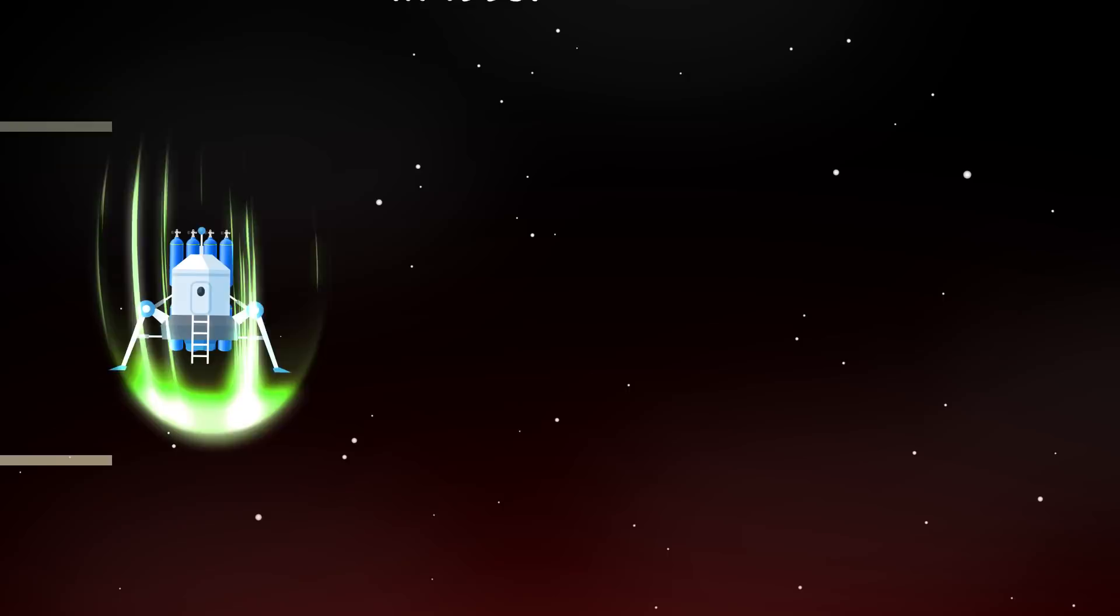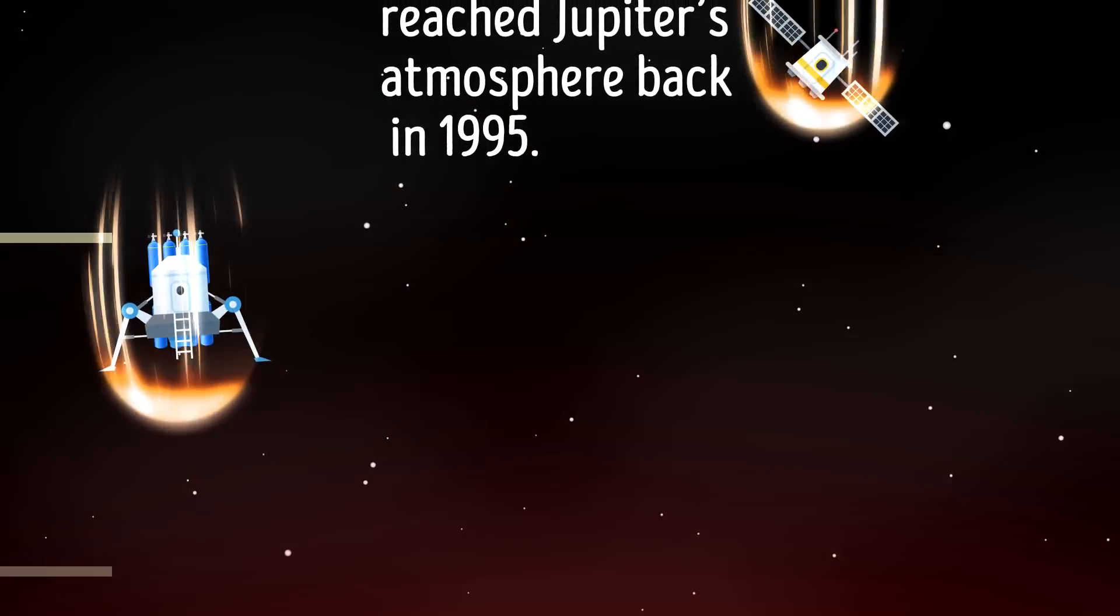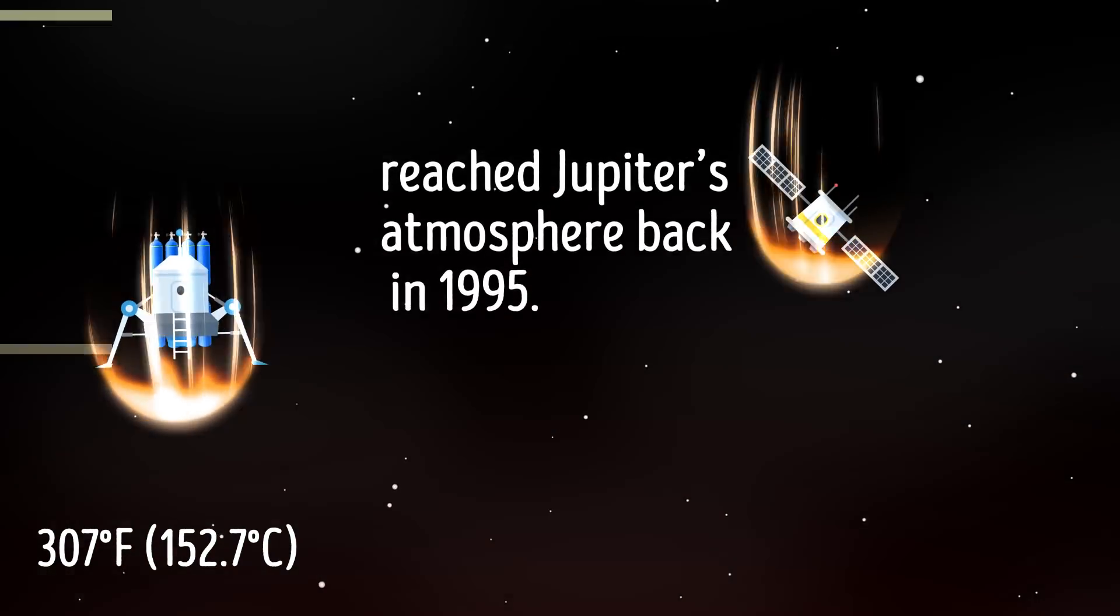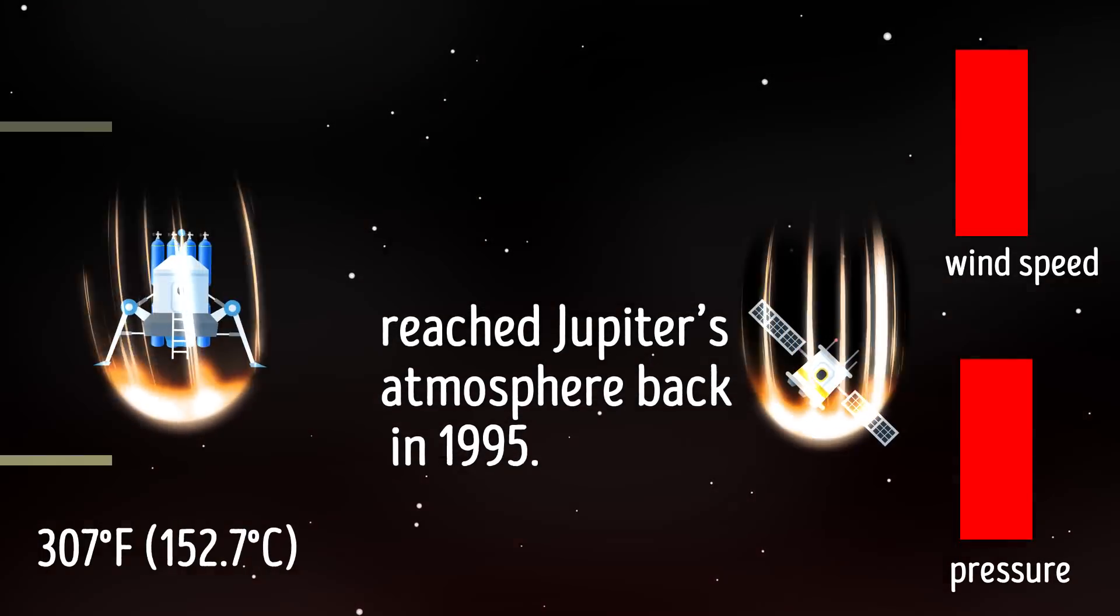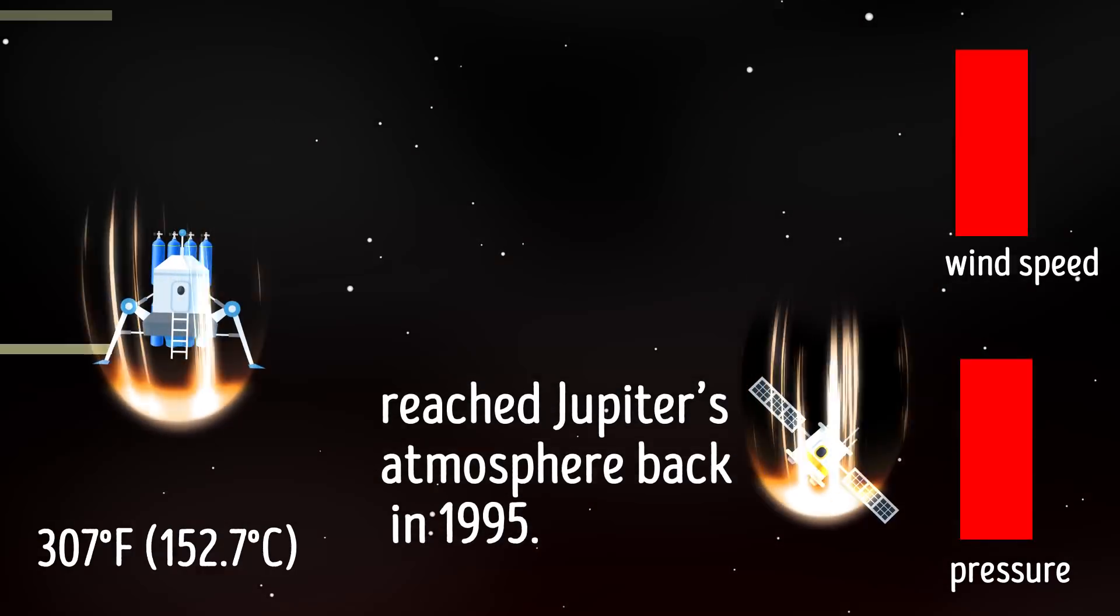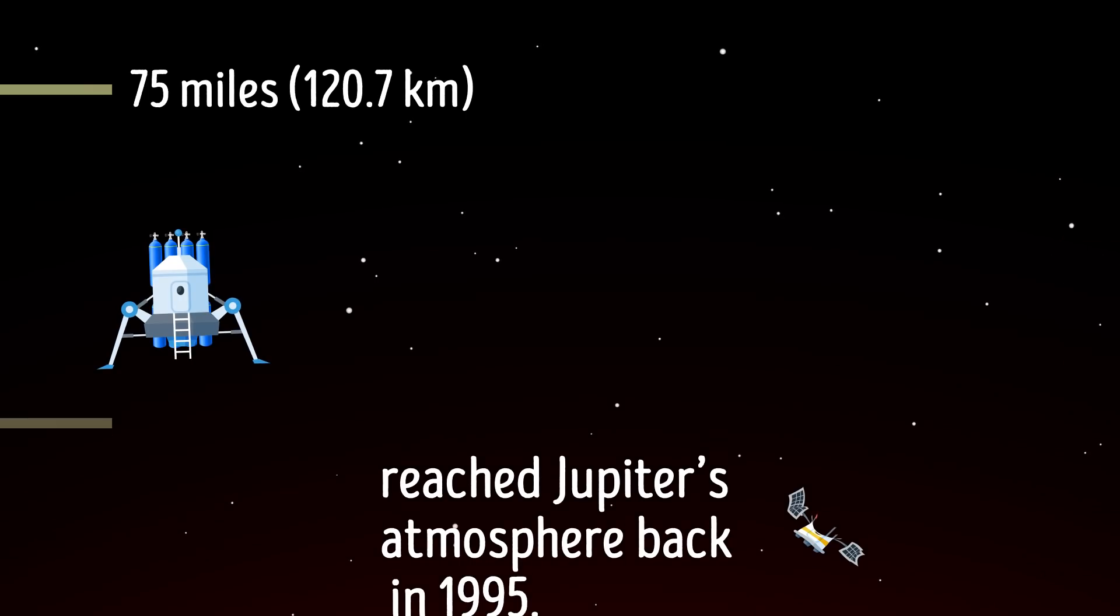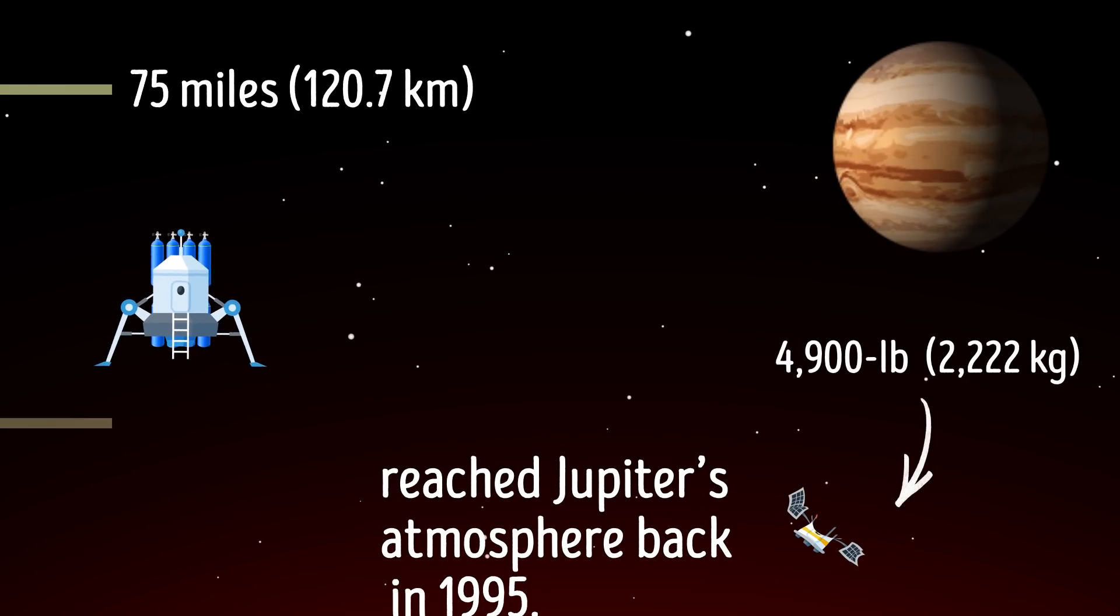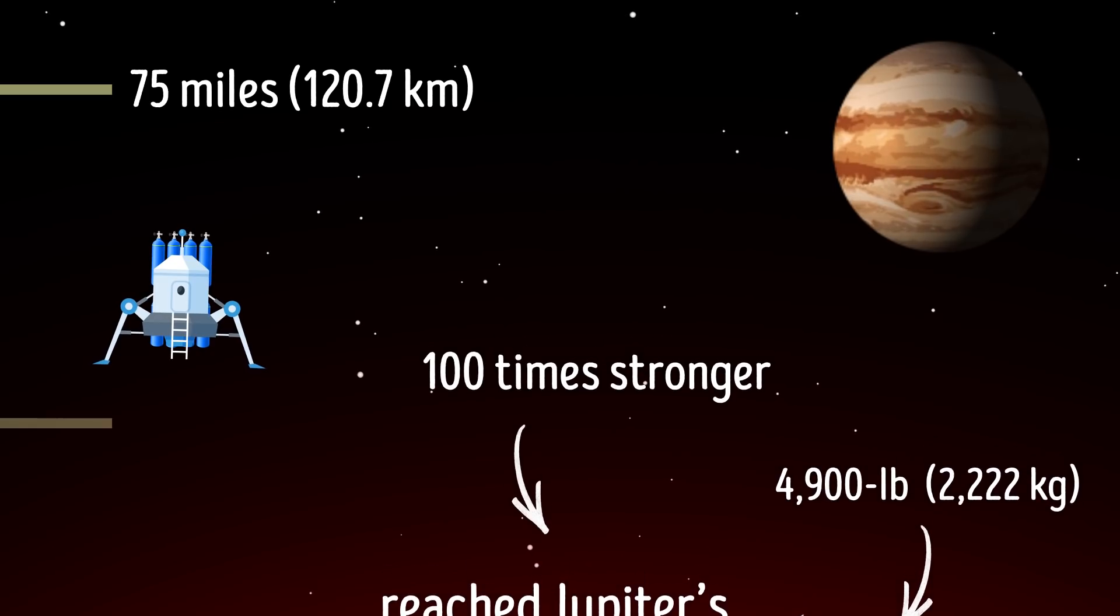Just take it from the Galileo probe, which reached Jupiter's atmosphere back in 1995. It survived scorching temperatures as it started its descent. It kept moving even when the temperature suddenly dropped down to 307 degrees Fahrenheit, and the pressure as well as the wind speed increased. But 78 minutes into its exploration, things went downhill when overwhelming pressure finished the probe off for good. So about 75 miles into the atmosphere, you'll approach the limit of human exploration on Jupiter. This is where the 4,900-pound Galileo probe was literally crushed by the atmospheric pressure, which is at this point over 100 times stronger than it is on the surface of our planet.